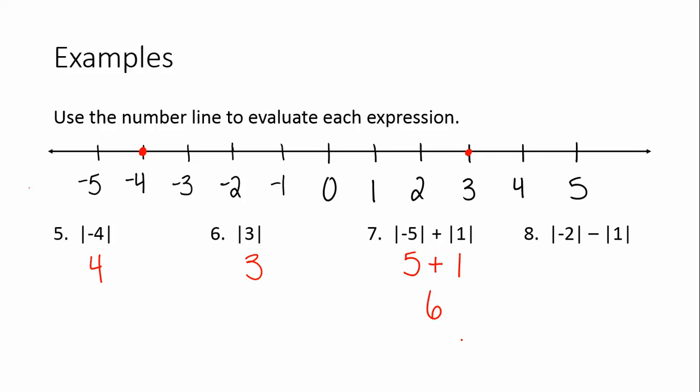You go ahead and try number 8, see if you can get the right answer, and then check your work with me. Pause the video here and try number 8. The absolute value of negative 2 would be 2. Negative 2 is 1, 2 units away from 0. Then we are subtracting the absolute value of 1, which is just going to be 1. And 2 minus 1 is 1. Hopefully you got that one right, and if not, you can see where you went wrong.